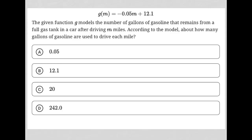This question starts off by providing us with this function here, g of m equals negative 0.05 m plus 12.1. This is definitely in the structure y equals mx plus b, where for us, our negative 0.05 would be our m value, m representing slope, and our 12.1 would be our b value, b representing the y-intercept.